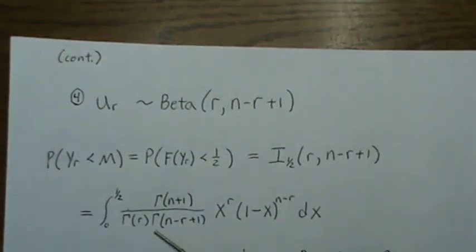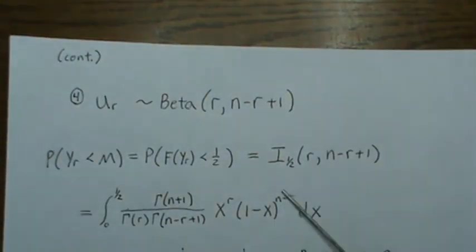And this is the notation that's commonly used for an incomplete beta function. But this is the way my mind works, and this is a beta function with R and N minus R plus one for the alpha and the beta parameters. And so we're integrating from zero to one half.